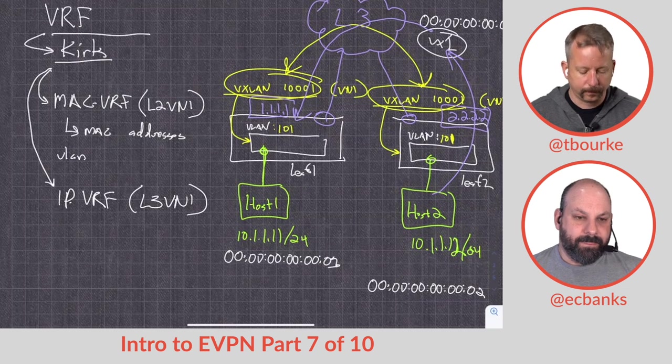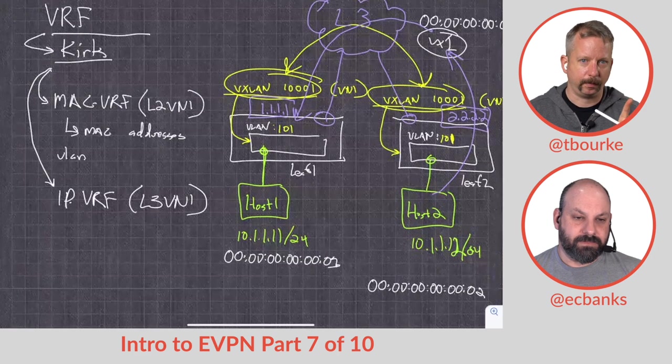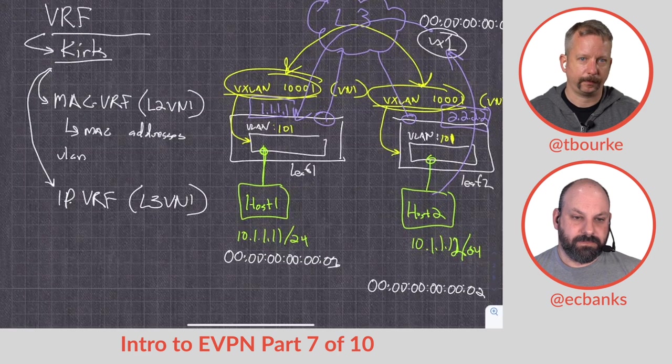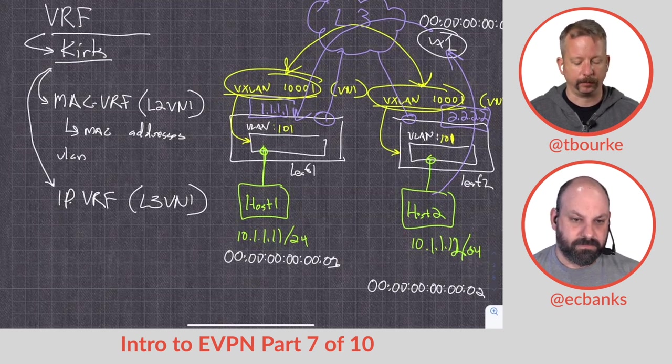Yeah, we're just going to have the underlay in the default VRF, and that's fine. And then all of our EVPN stuff, we're going to put it into at least one IP VRF, one router VRF, switch VRF, whatever you want to call it. We're going to put at least one.